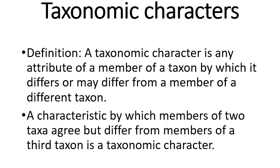A taxonomic character is any attribute of a member of a taxon by which it differs, or may differ, from a member of a different taxon. A characteristic by which members of two taxa agree but differ from members of a third taxon is also a taxonomic character. Not all taxonomic characters are equally useful; some are powerful indicators of relationship and others are not. The usefulness of a character depends on its information content.